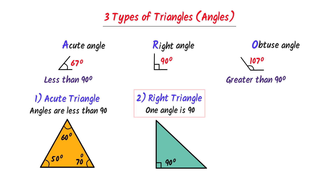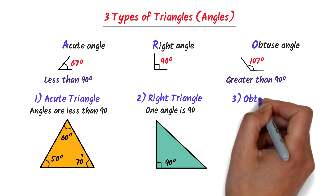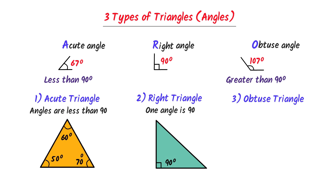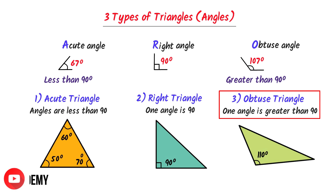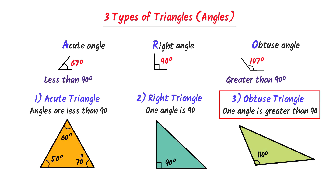The third and last type of triangle is the obtuse triangle. Those triangles in which one angle is an obtuse angle are called obtuse triangles. For example, in this triangle, this angle is 110 degrees, which is greater than 90 degrees, so we say that this triangle is an obtuse triangle.